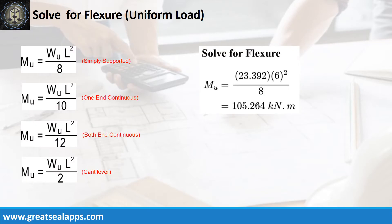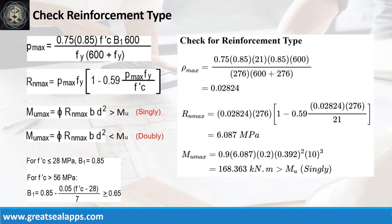Given factored load equals 23.392 kN per meter and L equals 6 meters, the maximum moment is 105.264 kN·m. The ρ-max from the given design criteria is 0.02824. Then RN-max is 6.087 MPa. And finally, the MU-max is 168.363 kN·m, which is greater than 105.264 kN·m, confirming a singly reinforced beam design.